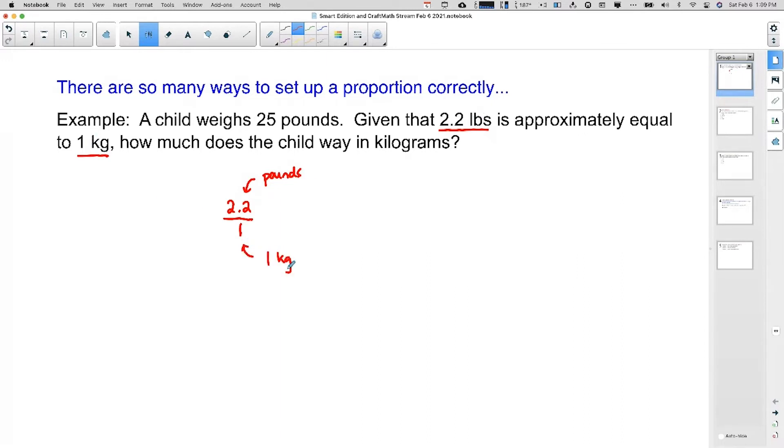Now, some of you may not set it up like this and that is fine. There's multiple ways. So over here on this side, a child weighs 25 pounds. Since I put pounds over here at the top, I want to put pounds over here at the top. How much does the child weigh in kilograms? So we're trying to find kilograms, and that is this missing spot.